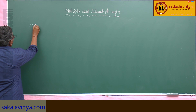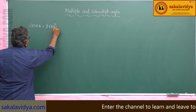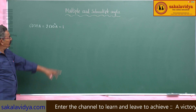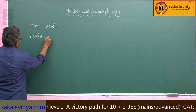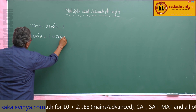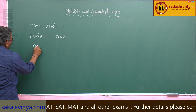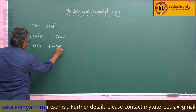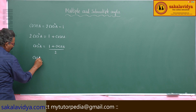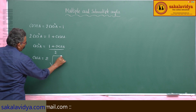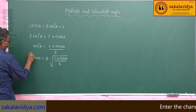We know that cos 2a equals 2cos²a minus 1. Bringing minus 1 to the other side, we get 2cos²a equals 1 plus cos 2a, so cos²a equals (1 plus cos 2a) / 2. Therefore, cos a equals plus or minus the square root of (1 plus cos 2a) / 2.